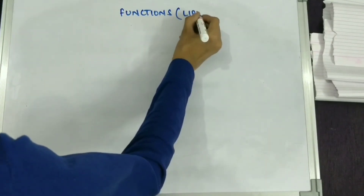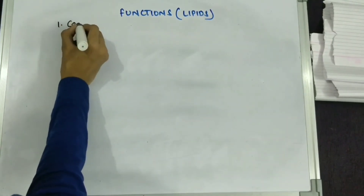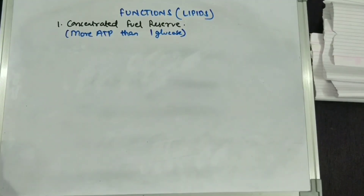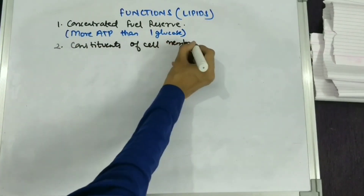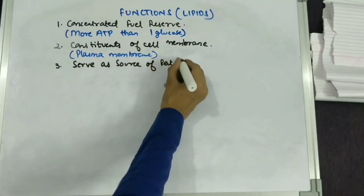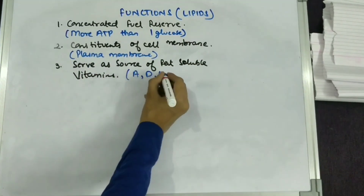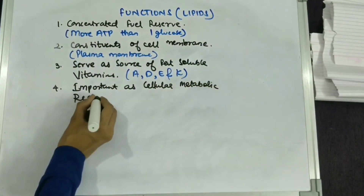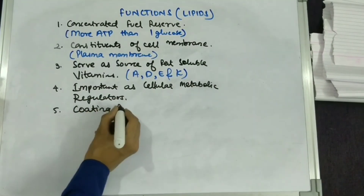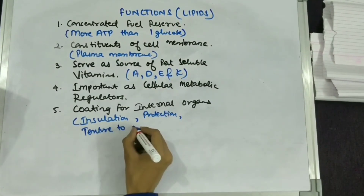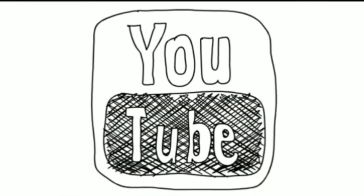Let us now discuss the functions of lipids. As a concentrated fuel reserve, one fatty acid molecule yields more ATP than one glucose molecule. Lipids are the constituents of the cell membrane — the plasma membrane is made up of lipids. They also serve as a source of fat-soluble vitamins, that is vitamins A, D, E, and K, which are important as cellular metabolic regulators. The coating for internal organs is made up of lipids, and they provide insulation, protection, and texture to the skin.